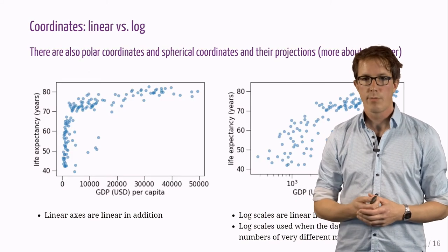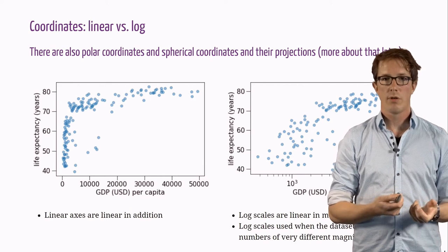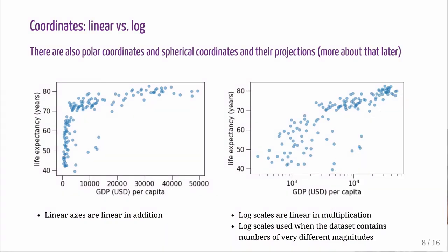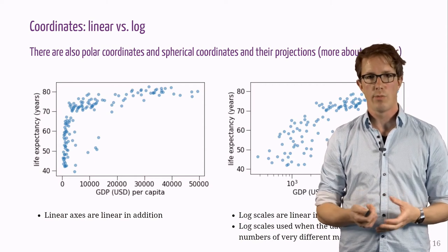Coordinates. Sometimes we need to choose between linear and log coordinates. In this example, a log scale on the right hand side is more useful because the data set contains numbers of very different magnitudes. There exists also polar and spherical coordinates and their projections. We will see more about that later.